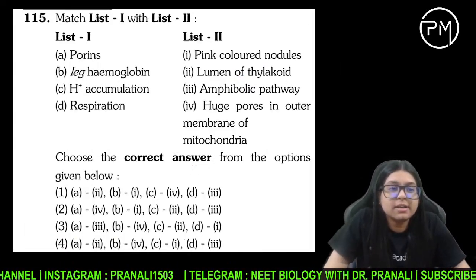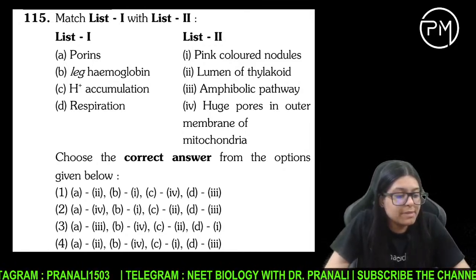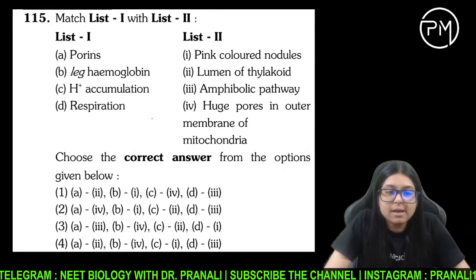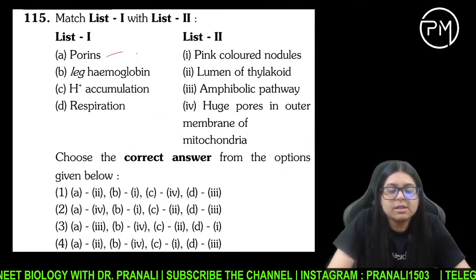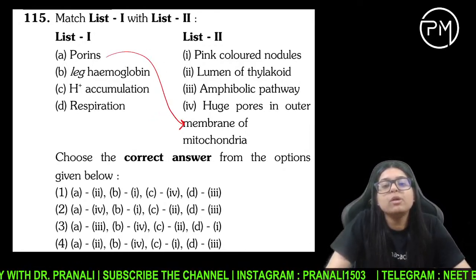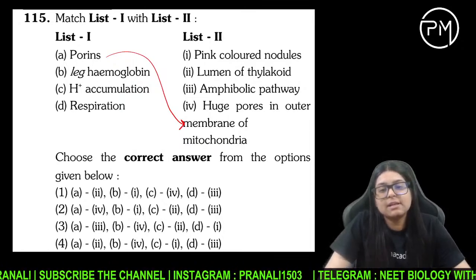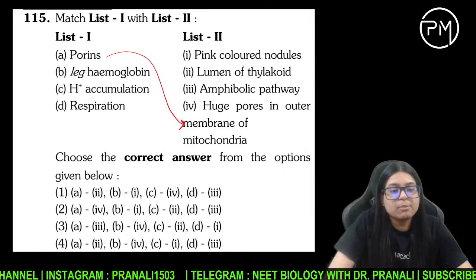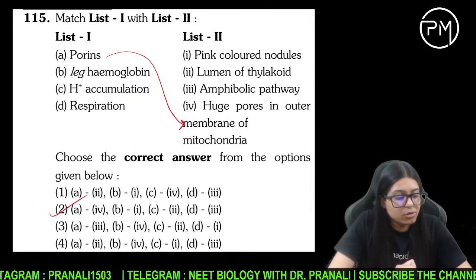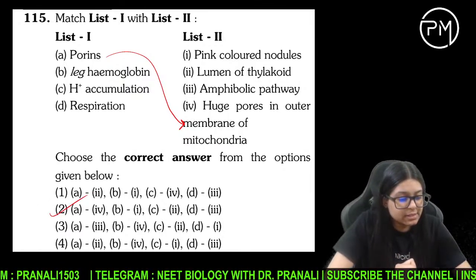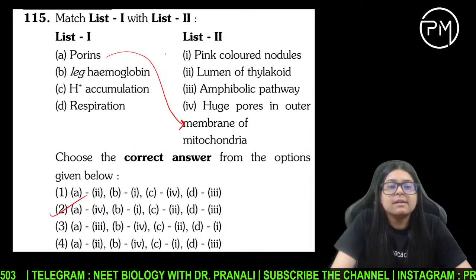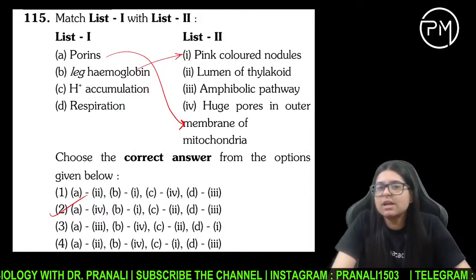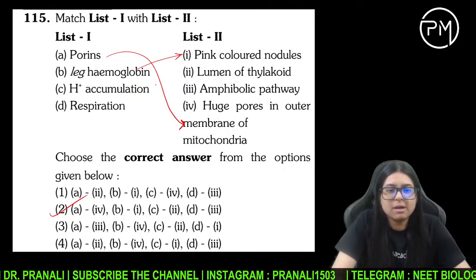Match the column — NEET paper. If you have one answer, that is porin — it is a big pore. Bacteria cell wall, outer membrane of mitochondria — so A-4 answer. Leg hemoglobin pink color, oxygen scavenger ki tarah kaam karti hai taaki nitrogenase enzyme kaam kar paye.